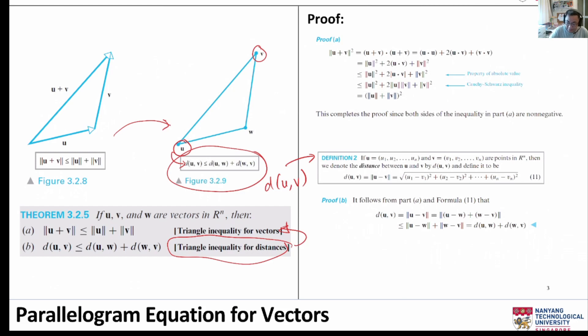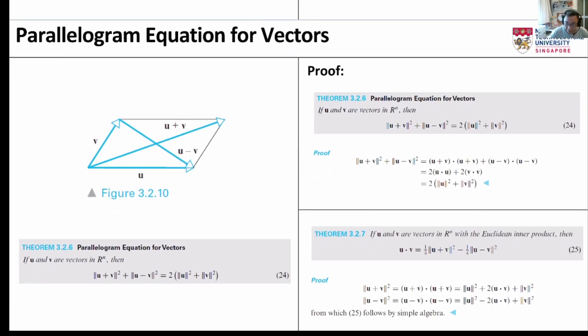This completes our discussion for triangle inequality. We next turn to parallelogram equations for vectors. Figure 3.2.10 shows a parallelogram in which one of the side is called v and the other side is called u. What is v plus u? Basically it means that we take a look at vector v, at the end point of vector v we add u.